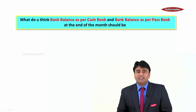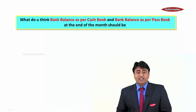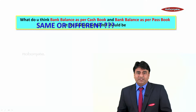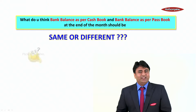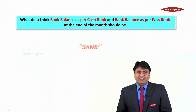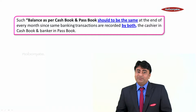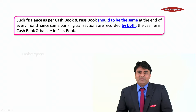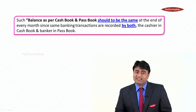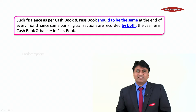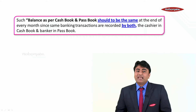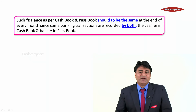Now the next question is: should the bank balance as per the cash book and the bank balance as per the pass book at the end of the month be the same or different? The answer is obviously the same. The balances must agree because the same banking transactions are recorded by both the cashier in the cash book and the banker in the pass book.